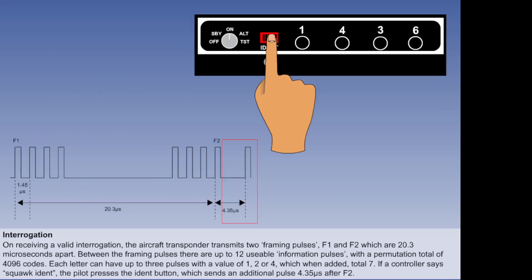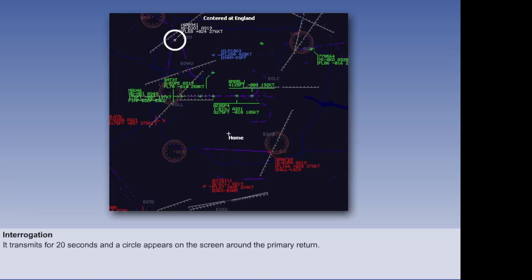To assist the controller in identifying an aircraft, the controller may ask the pilot to squawk ident. The pilot presses the ident button on the transponder and a further pulse, called a special position identification pulse, is transmitted 4.35 microseconds after the second frame pulse. This pulse transmits continuously for 20 seconds once the button is depressed. And the indication to the radar controller when this happens is that a ring appears on the screen, encircling the primary return.